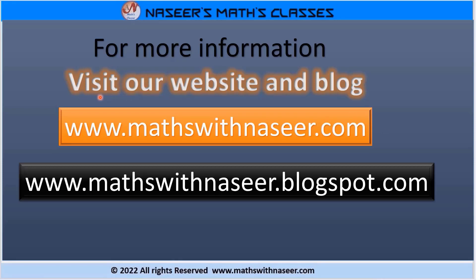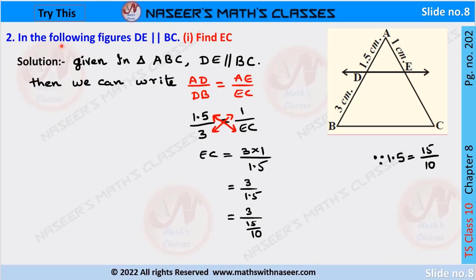For more information, visit our website www.mathswithnaseer.com and blog www.mathswithnaseerblogspot.com. We are going to discuss Try This, page number 2, NCERT Similar Triangles. Second problem: In the following figure, DE is parallel to BC.